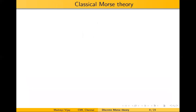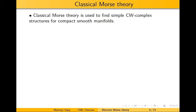Before we go on to discrete Morse theory, I'd like to motivate it a little with classical Morse theory. This will be filled with definitions that aren't too important to discrete Morse theory, but I want to define the main theorem because it requires them. Classical Morse theory is used to find CW complex structures for compact smooth manifolds.